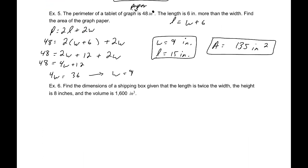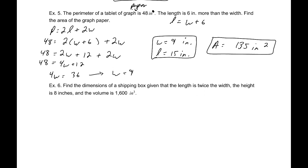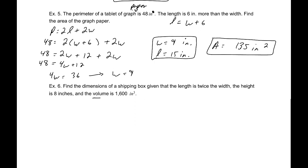Last question, example 6. Find the dimensions of a shipping box, given the length is twice the width, the height is 8 inches, and the volume is 1600 inches cubed. Because we have volume, we want to relate the width, the length, and the height, and the volume. We know that volume is length times width times height. The height is 8 inches, and the length is twice the width, that means L equals 2W.